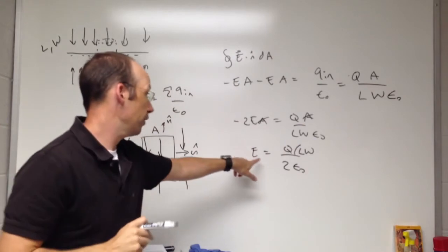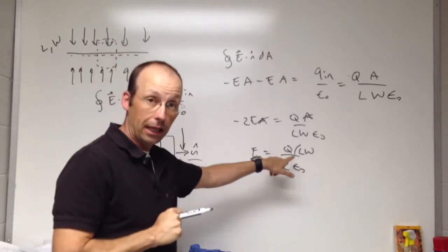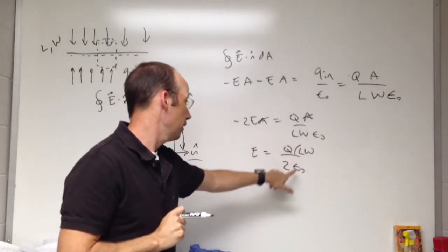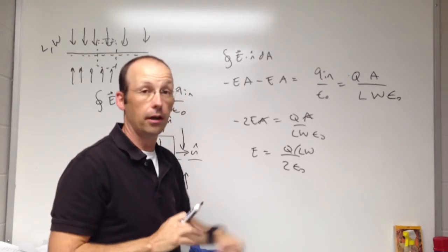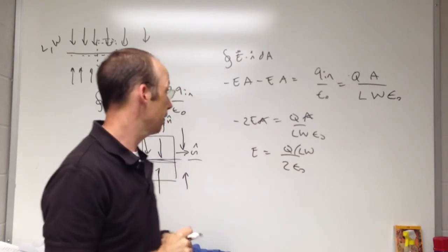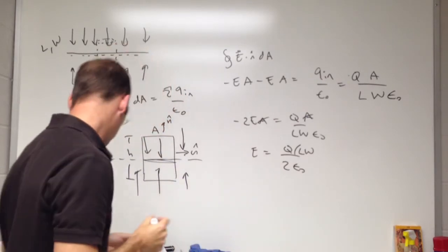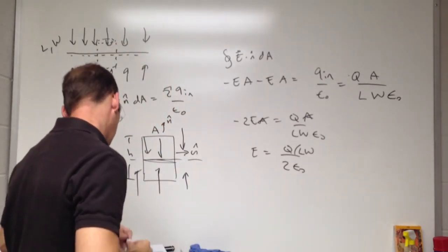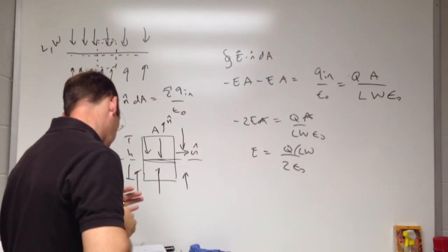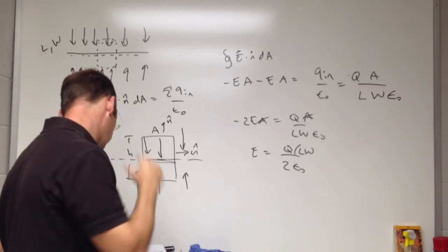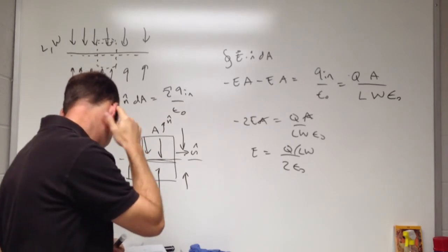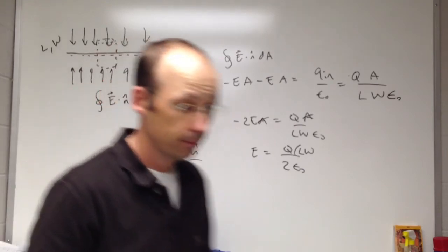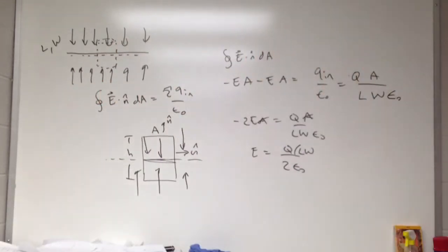And that is the electric field due to a plate. Remember, we derived that before — Q over A, over 2 epsilon naught. That is what the question asks. Don't skip steps — describe all assumptions and everything.